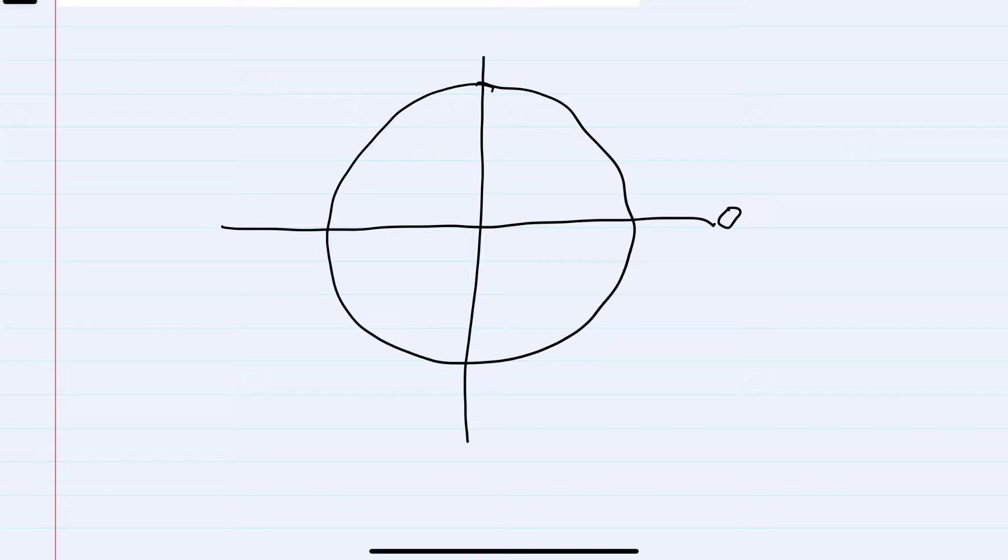So looking back at our unit circle, we have zero radians along the x-axis here at the top, π/2 along the negative x-axis would be π radians, down at the bottom 3π/2.